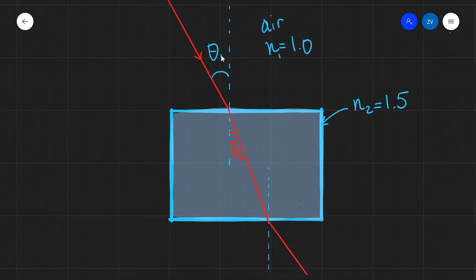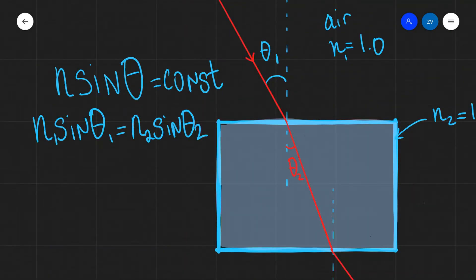Snell's law says that the product of the refractive index multiplied by the sine of the angle is equal to a constant. This is what's given in our formula booklets. Remember, every time we are given that some product is a constant, we can rewrite the same equation as N1 sine theta 1 is equal to N2 sine theta 2. In this case, theta 1 is our angle of incidence, and theta 2 is the angle of refraction. And this is another way that we can write Snell's law.